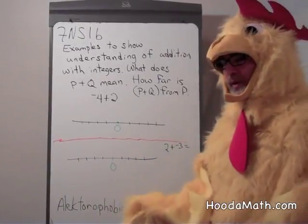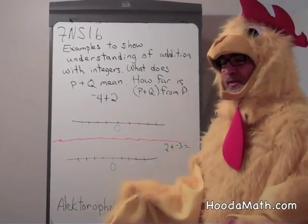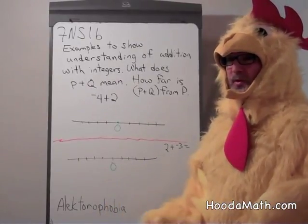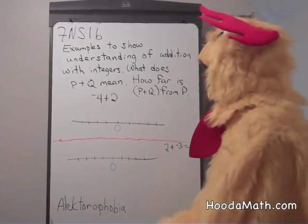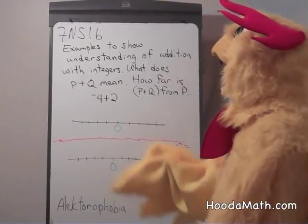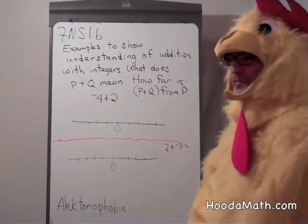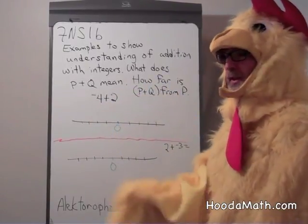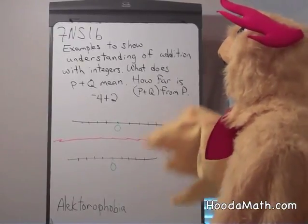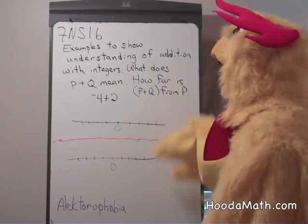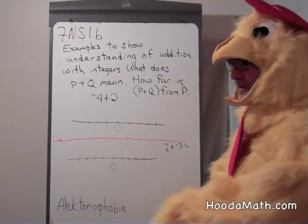What we're going to try to figure out is what distance is caused when we add integers. So, for example, what does p plus q mean if we start at any number p and add q? How far is p plus q from p? So we're going to use two examples.